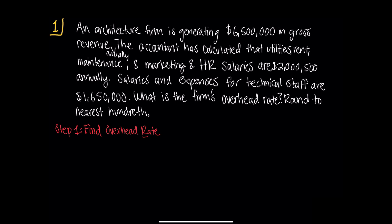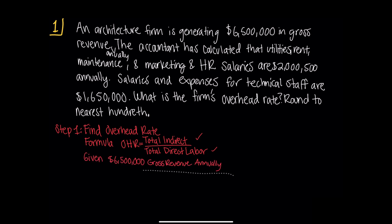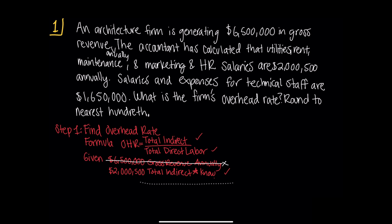Also, write down what the overhead rate formula is, which is the ratio of total indirect expense divided by total direct labor. Also in this step, identify the givens and underline or highlight them in the question. Gross revenue is $6,500,000. Total indirect expense is $2,500,000. Employee salary and expense — this is something we must know from prior knowledge — gives us the clue that this is really our total direct labor in this problem. To fill in the OHR formula, which of the givens are extra information? We know the gross revenue is an extra variable, so we'll cross that out.